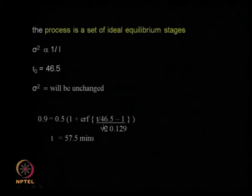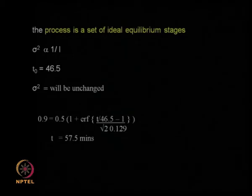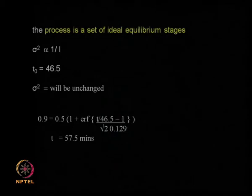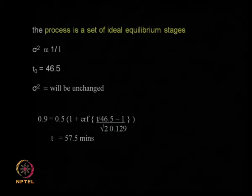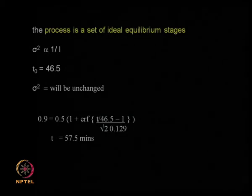We examined three different situations depending on what is controlling: bulk mass transfer (solute movement from bulk to surface), pore diffusion (solute movement inside the solid matrix), and ideal equilibrium stages. In each case sigma has a different dependence on velocity, so doubling the velocity gives different sigma values and therefore different collection times to achieve 90 percent yield.